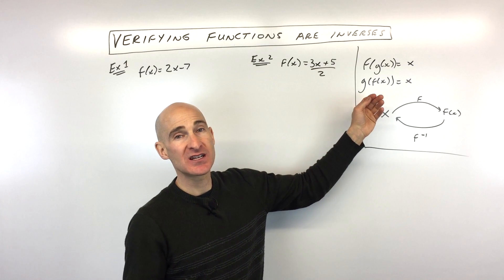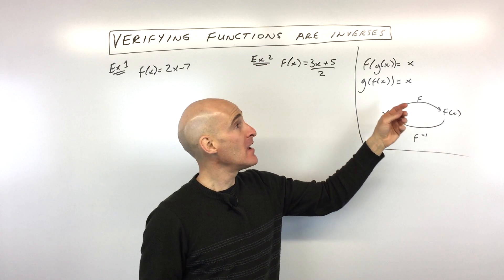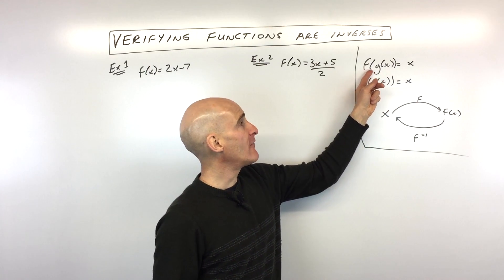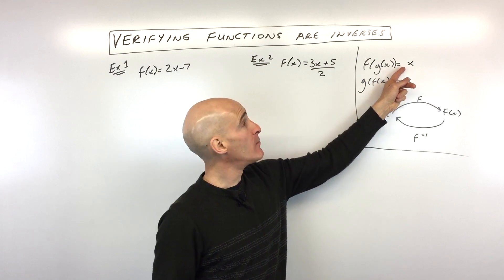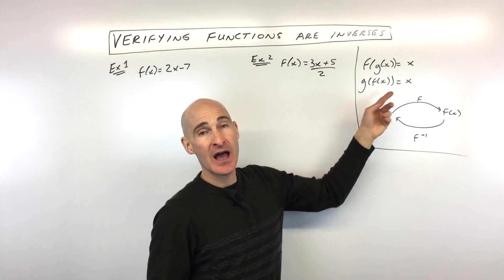But the way that we test algebraically that functions are inverses of each other, or verify or prove or show, is to use this method here of composition of functions. F of G of X—if you compose these two and you get X, or G of F of X and you get X.